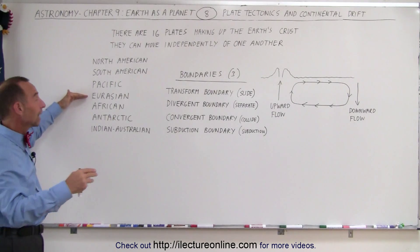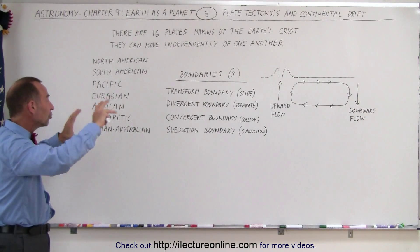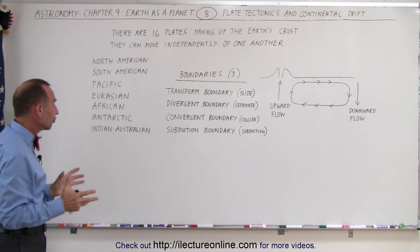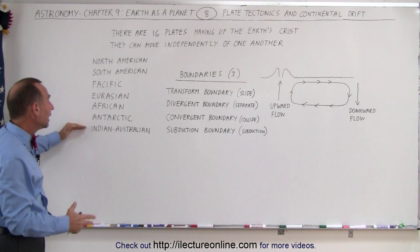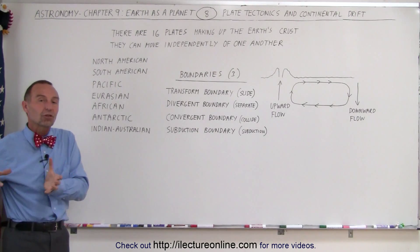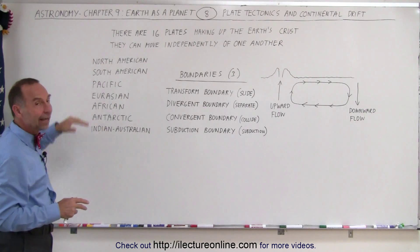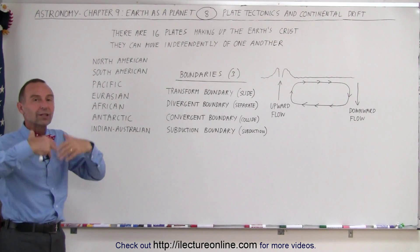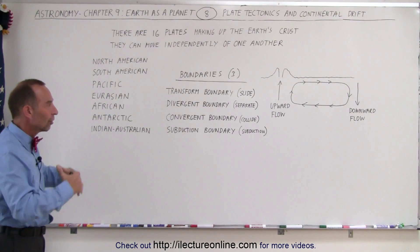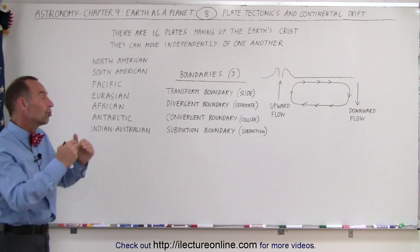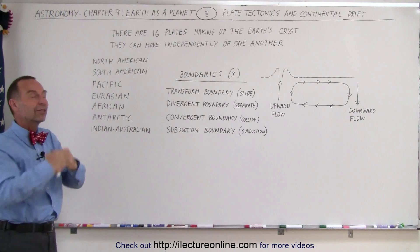We have the Eurasian plate that contains both Europe and Asia. We have the African plate containing the continent of Africa. The Antarctic plate is a separate plate down at the bottom there. And the Indian-Australian plate, which is slowly moving up against the Eurasian plate, and that's where those two meet. That's where the Himalayan mountains are still growing in size, still being pushed up because of where the two plates collide.